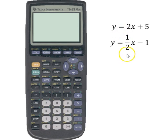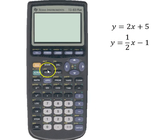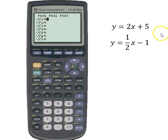Both of these are already set equal to y. Let's go to y equals, and we're going to put the right-hand side of the equation into our calculator. So it's y equals 2x, this is the variable button here, plus 5. That's the first equation.